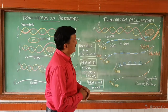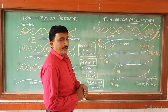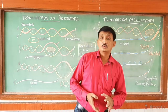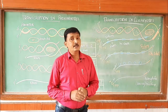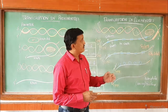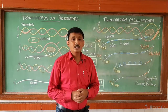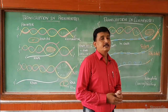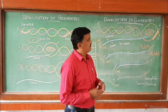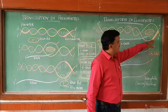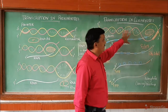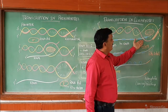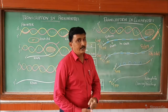Let us see the process of transcription in eukaryotes. RNA polymerase, whether it is 1, 3, or 2, initiates the process of RNA formation. The second step is elongation, and the last step is termination. Wherever the terminator region is present, the process is terminated and heterogeneous nuclear RNA is released.